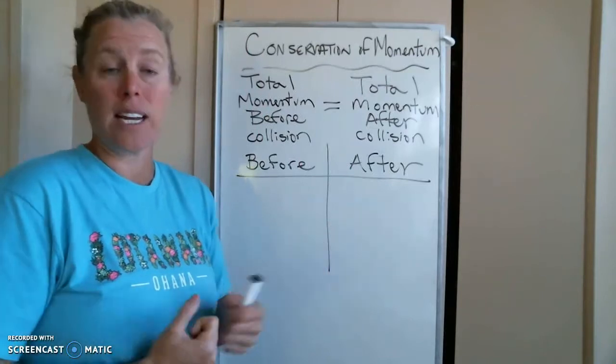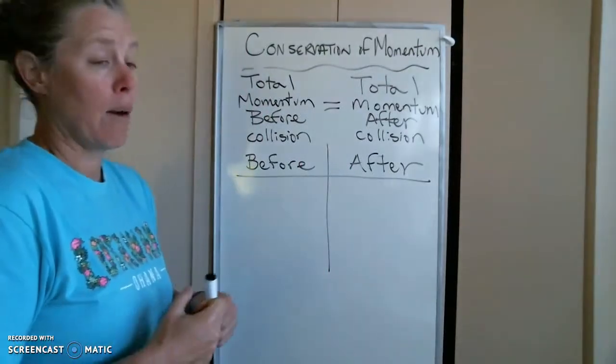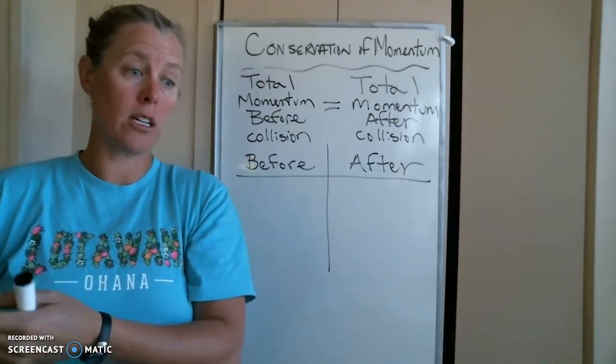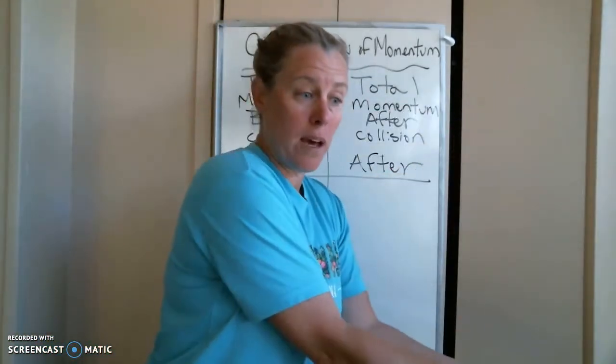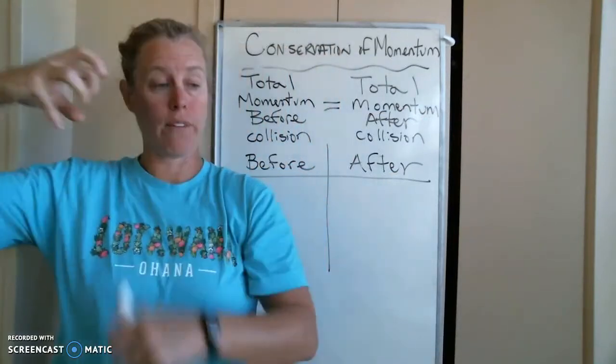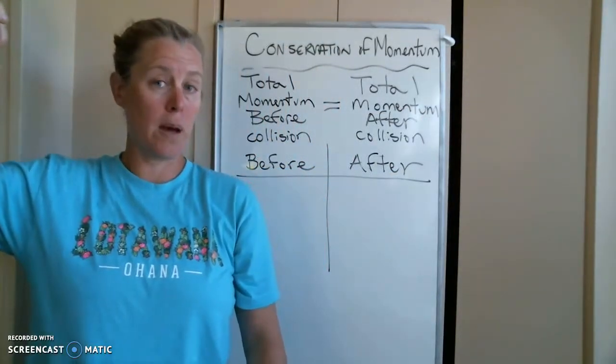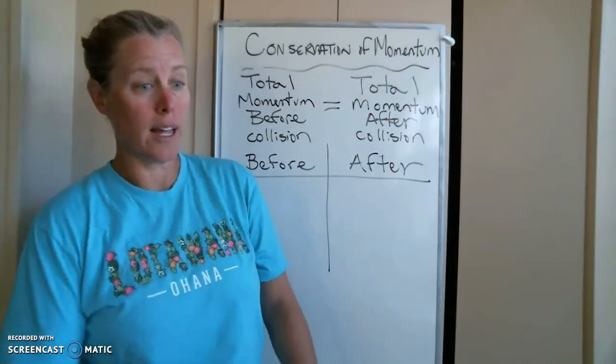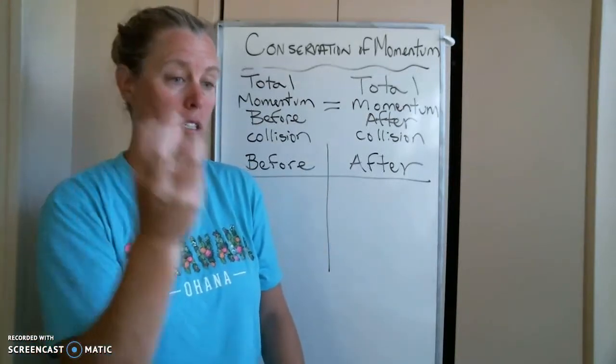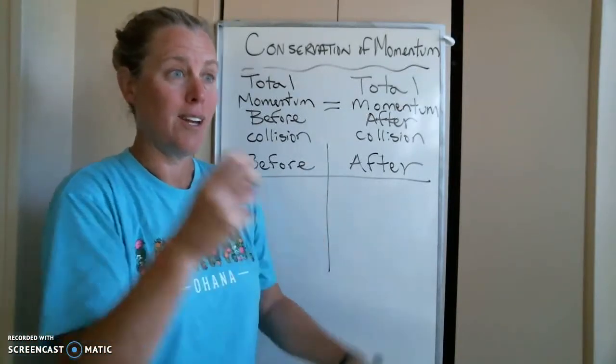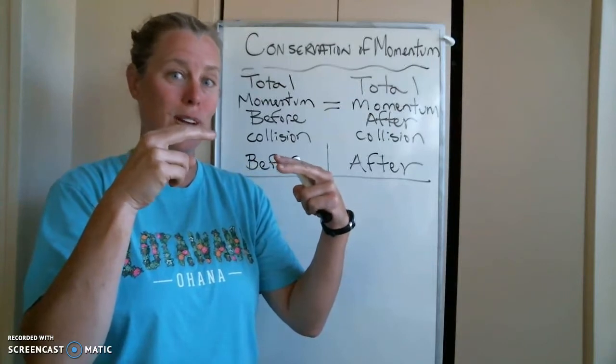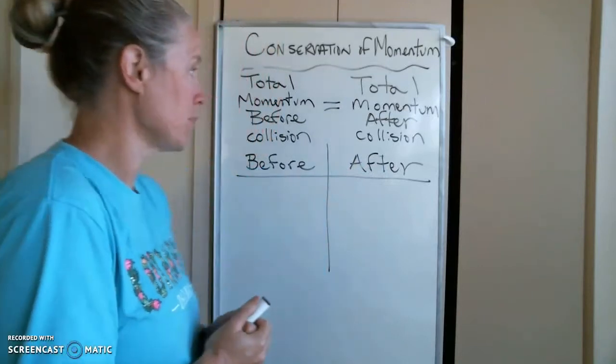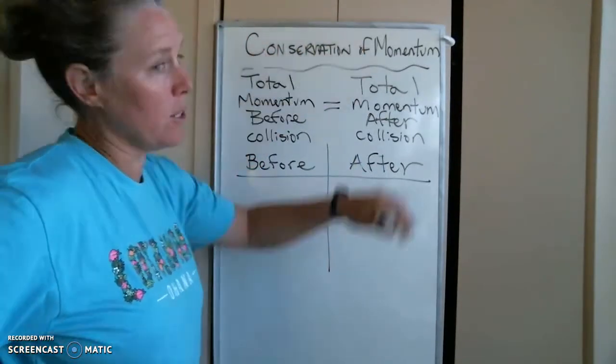So now this is the last thing, conservation of momentum. We've had conservation of energy, the amount of energy before at the beginning of the situation is equal to the amount of energy at the end. So the top of the pendulum, like if I held the pendulum up, it has a certain amount of energy. And at the bottom, it has a certain amount of energy. At the top, it was all potential. At the bottom, it was all kinetic. So this time, it's conservation of momentum.